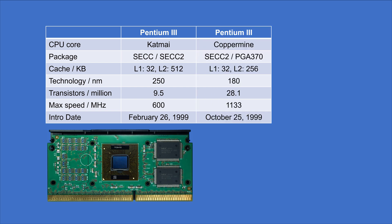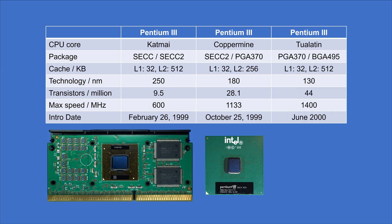The Coppermine core was a die shrink using a 180 nanometer node, introduced only 8 months later. The smaller node allowed integration of 256 KB second level cache at full clock speed, which also increased the transistor count to over 28 million. This Pentium 3 core was finally hitting the 1 GHz barrier. The Tualatin core was introduced in 2000 with a manufacturing technology of 130 nanometers, with the full 512 KB second level cache integrated on-die with 44 million transistors, enabling CPU speeds of 1.4 GHz.